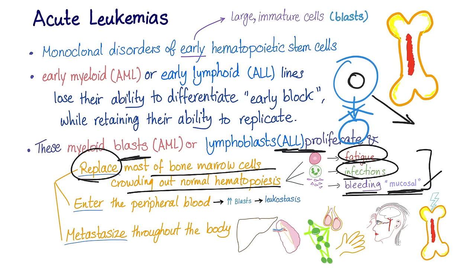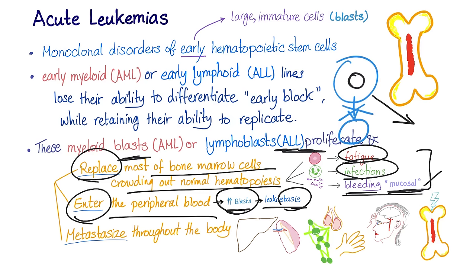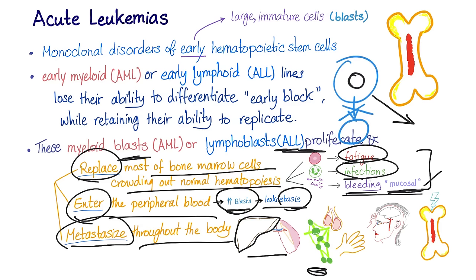Second, the blasts enter the peripheral blood. Increased blast numbers in the blood lead to leukostasis — blood stasis due to increased numbers of large, immature blasts. Third, these blasts metastasize throughout the body, going to the liver and spleen causing hepatosplenomegaly, going to the lymph nodes causing lymphadenopathy, going to the testicles causing testicular enlargement and potentially infertility.